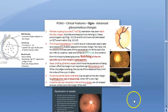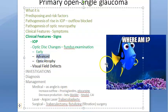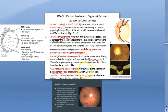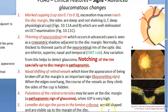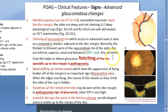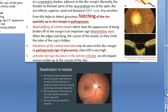To recap advanced glaucomatous changes: increased cupping, thinning of the neuroretinal rim, ISNT rule not followed, lamellar dots visible, nasalization of vessels, bayonetting sign, notching of the rim (pathognomonic), and pulsation of retinal arterioles (pathognomonic). These are all the advanced glaucomatous changes.